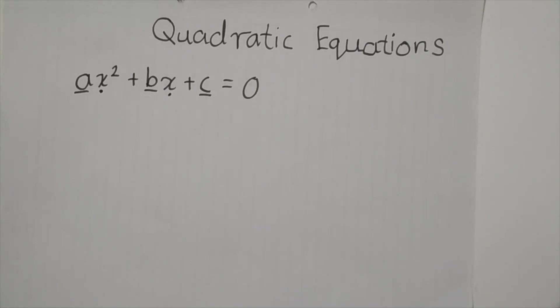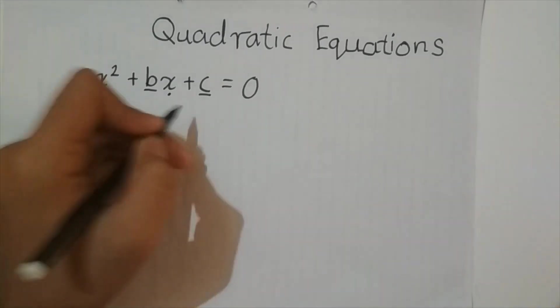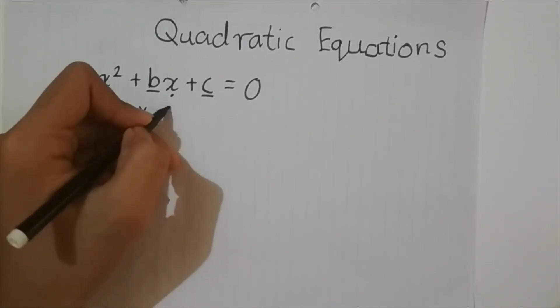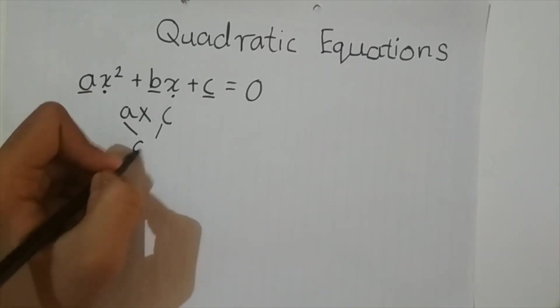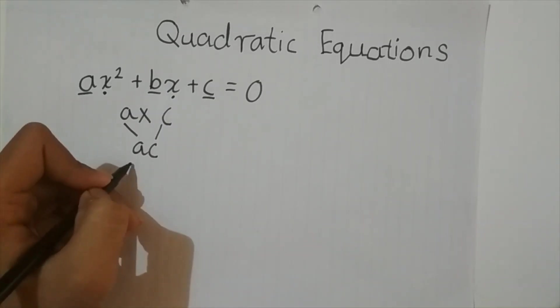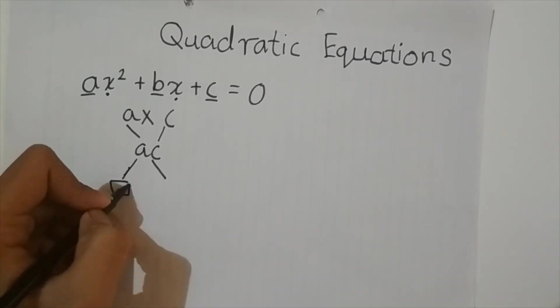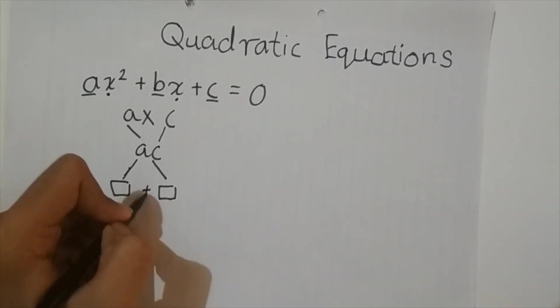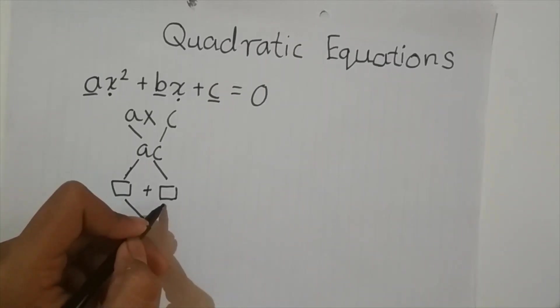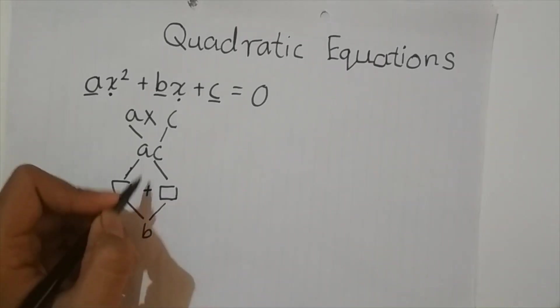In order to factorize, first we need to split the term bx into two parts. For that, we have to first multiply a into c, that will give us a product ac, and then we have to split ac into two factors such that the first factor added to the second factor will give us b, and their product will be ac.